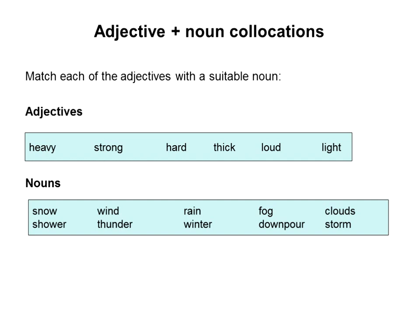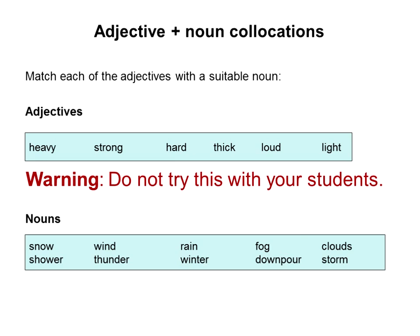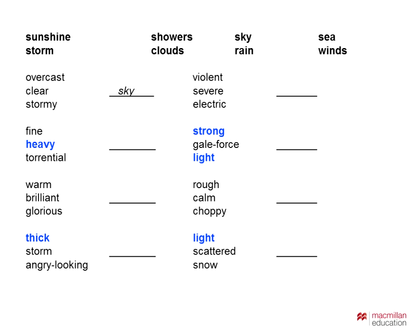Looking at collocations — here's a coursebook exercise that comes with a warning: do not try this with your students. Students match adjectives heavy, strong, hard, and thick to weather nouns. Anyone who's ever tried something like this will know how difficult it is. These adjectives are all very close in meaning — they all intensify weather nouns — and the dictionary creates the same sort of chaos as with phrasal verbs with 'put.'